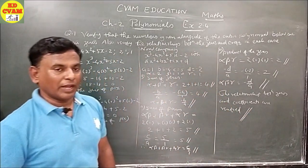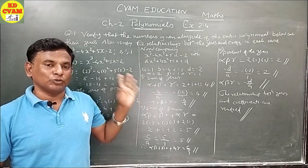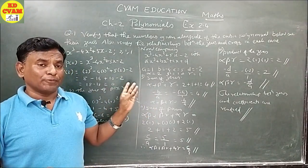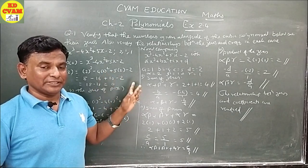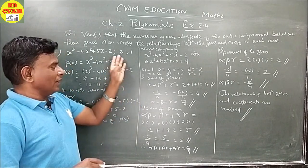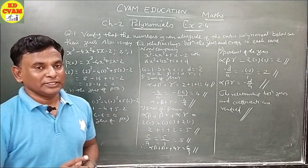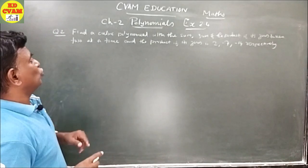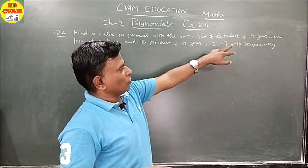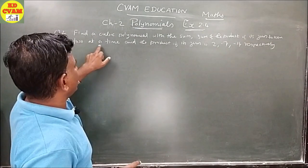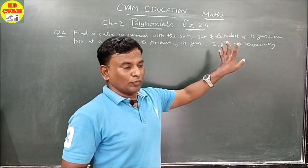I hope you understood. Pause and try both sums yourself. These sums are important and can be asked for three marks, so please practice them. Now let's go to question number 2: find a cubic polynomial with the sum, sum of product of its zeros taken two at a time, and product of zeros as 2, -7, and -14.